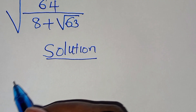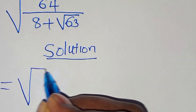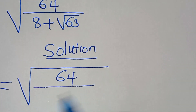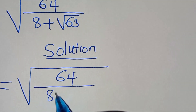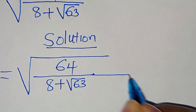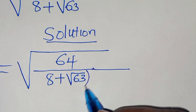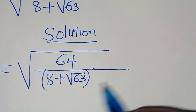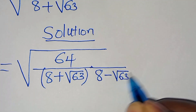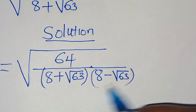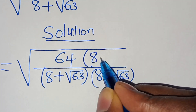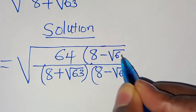We have the square root of 64 divided by 8 plus square root of 63. The first thing to do here is introduce a conjugate, which is 8 minus square root of 63. We also multiply the numerator with the conjugate, which is 8 minus square root of 63.